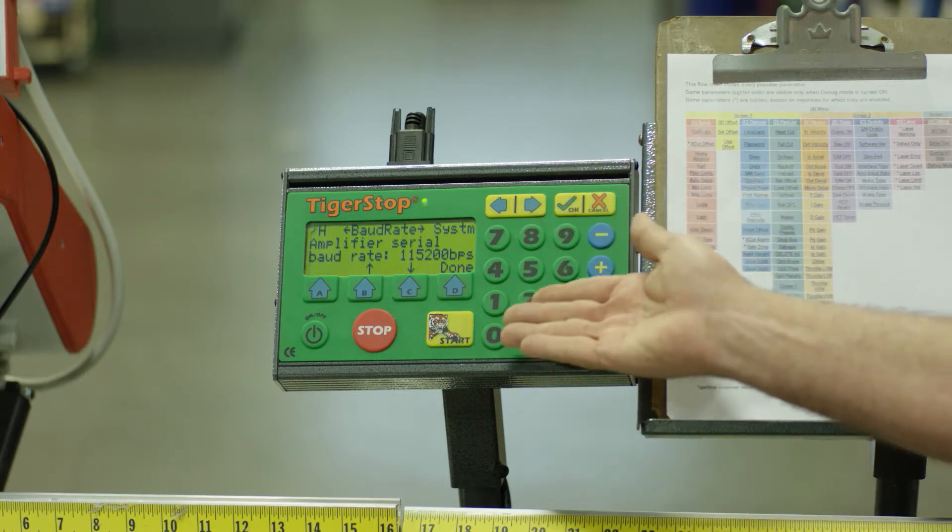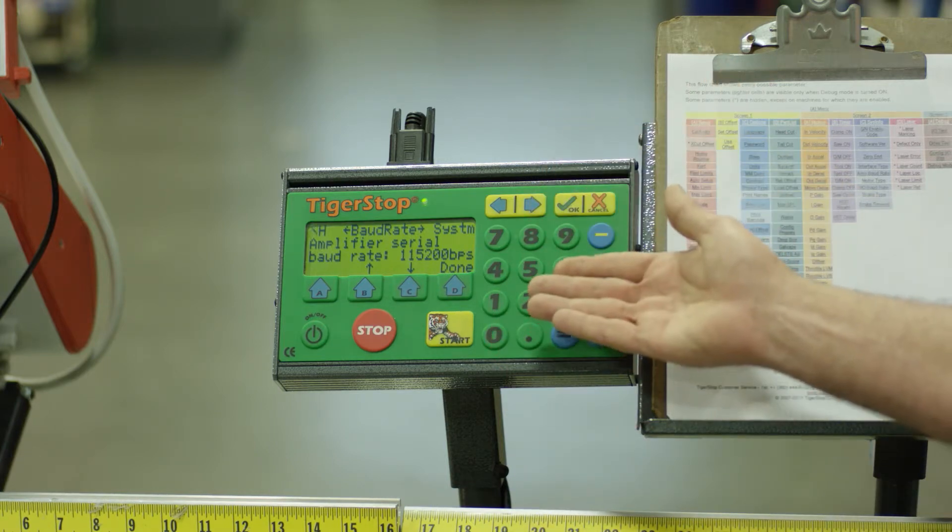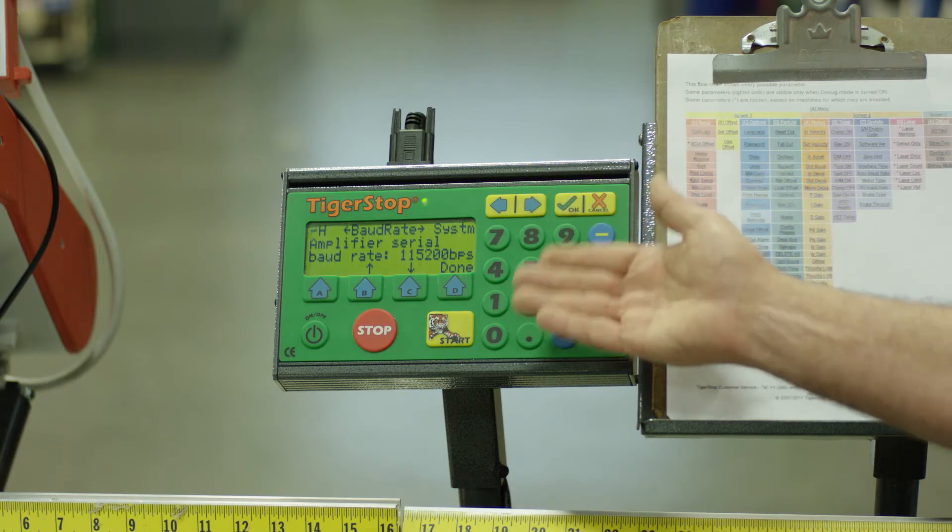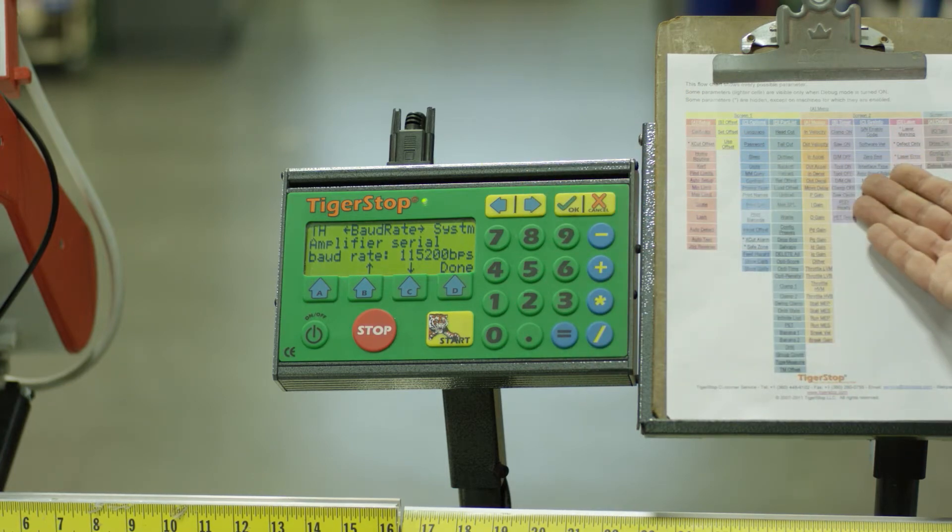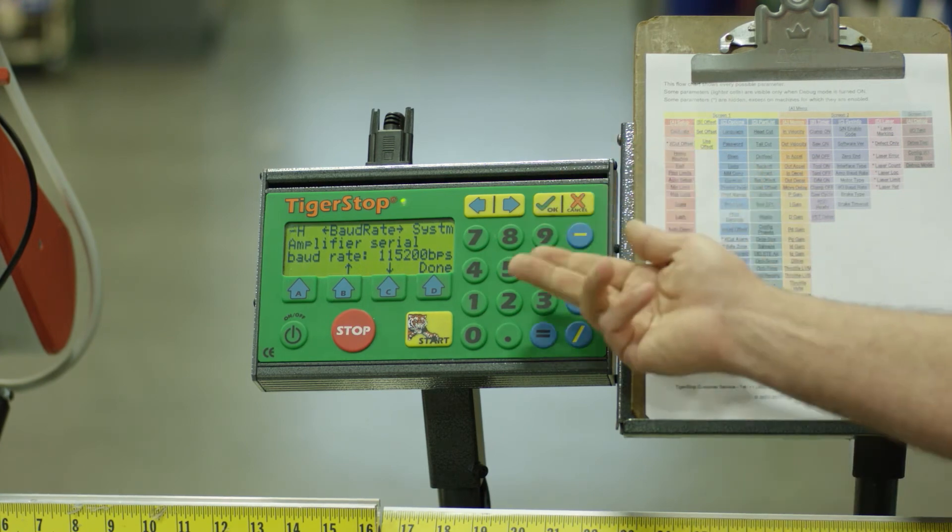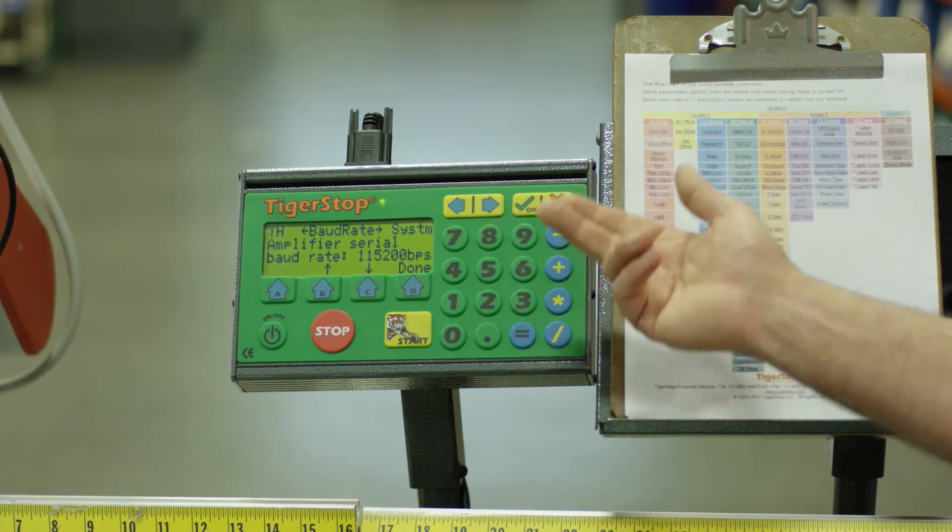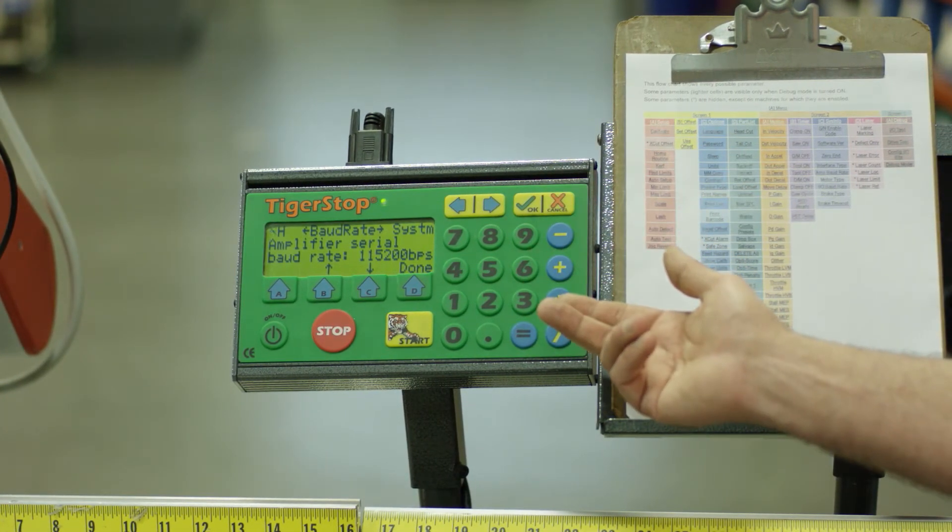What we're showing here right now is going into the Tiger Stop menus, using the menu flow chart, I'm able to go in and adjust various settings to suit my needs on the floor.